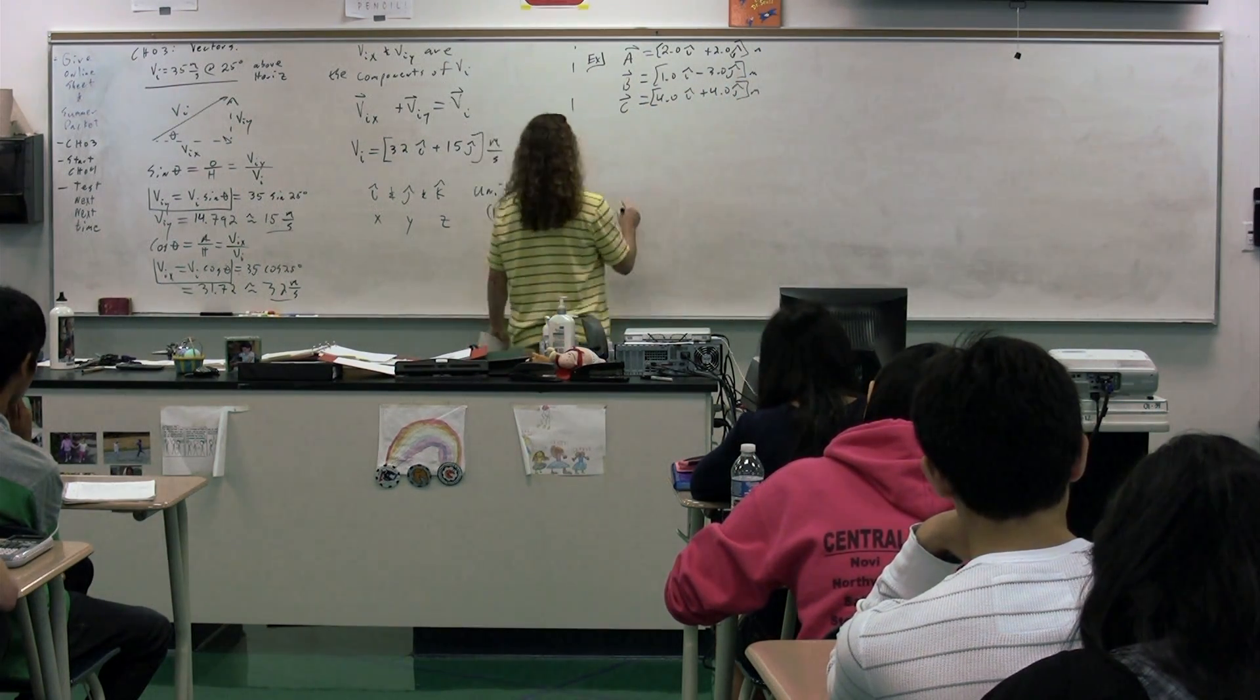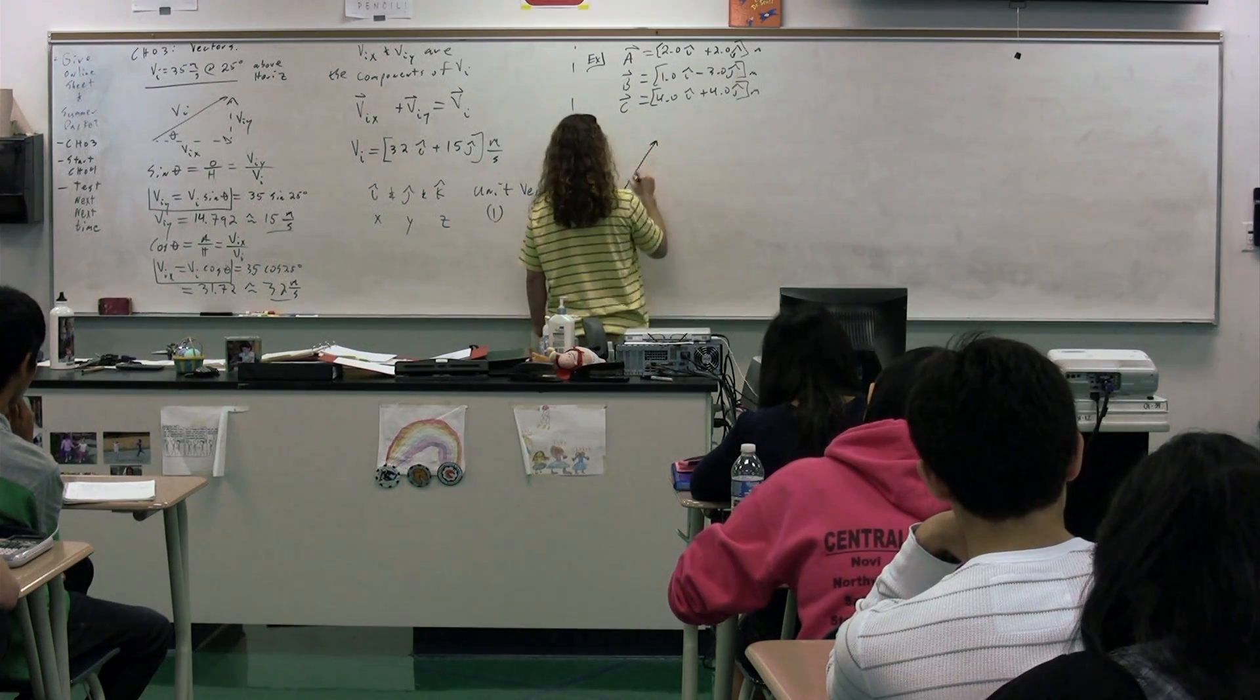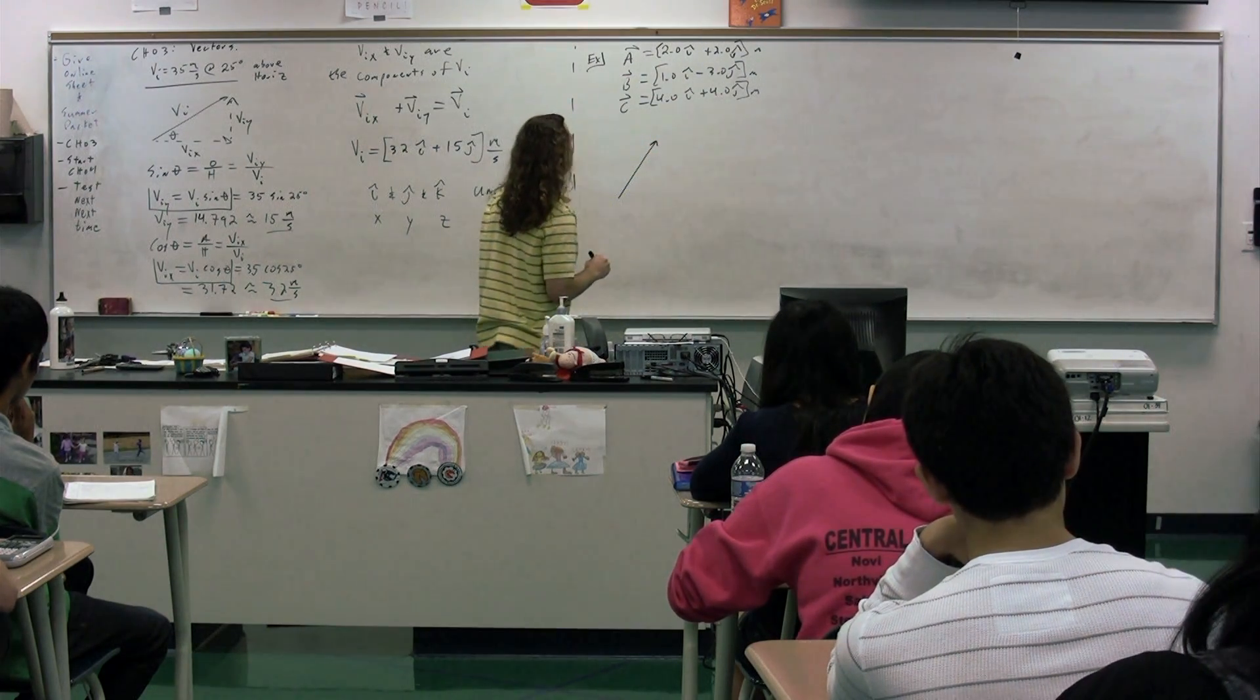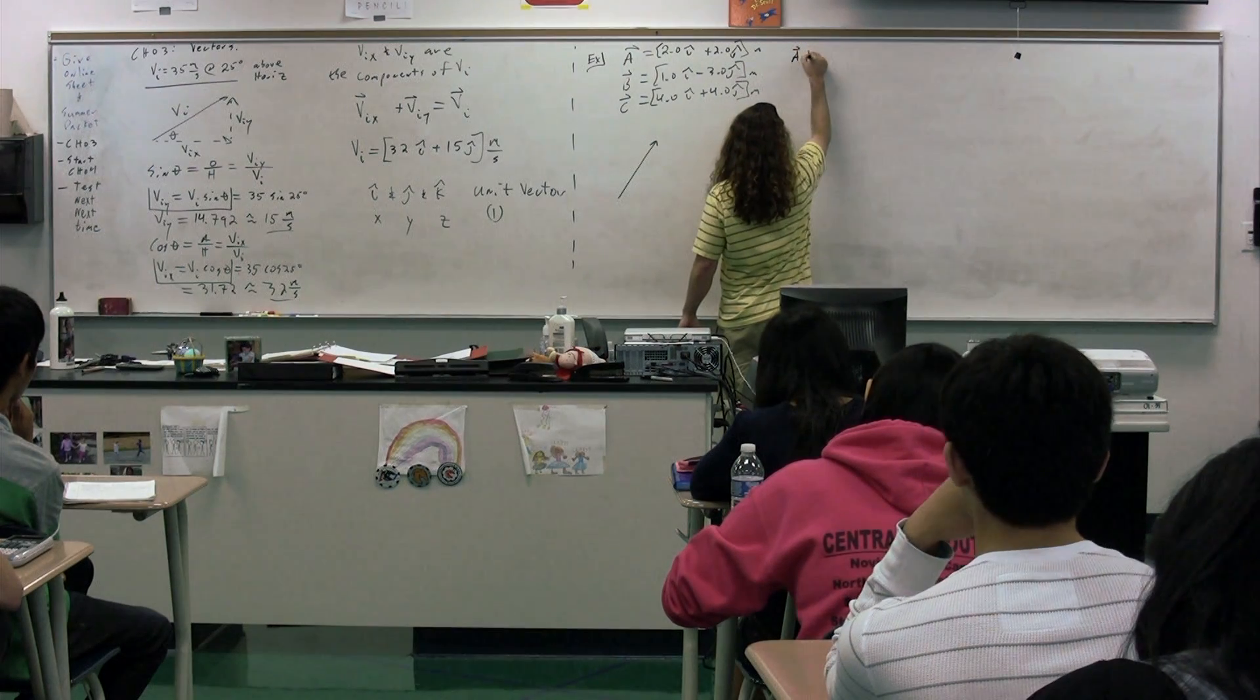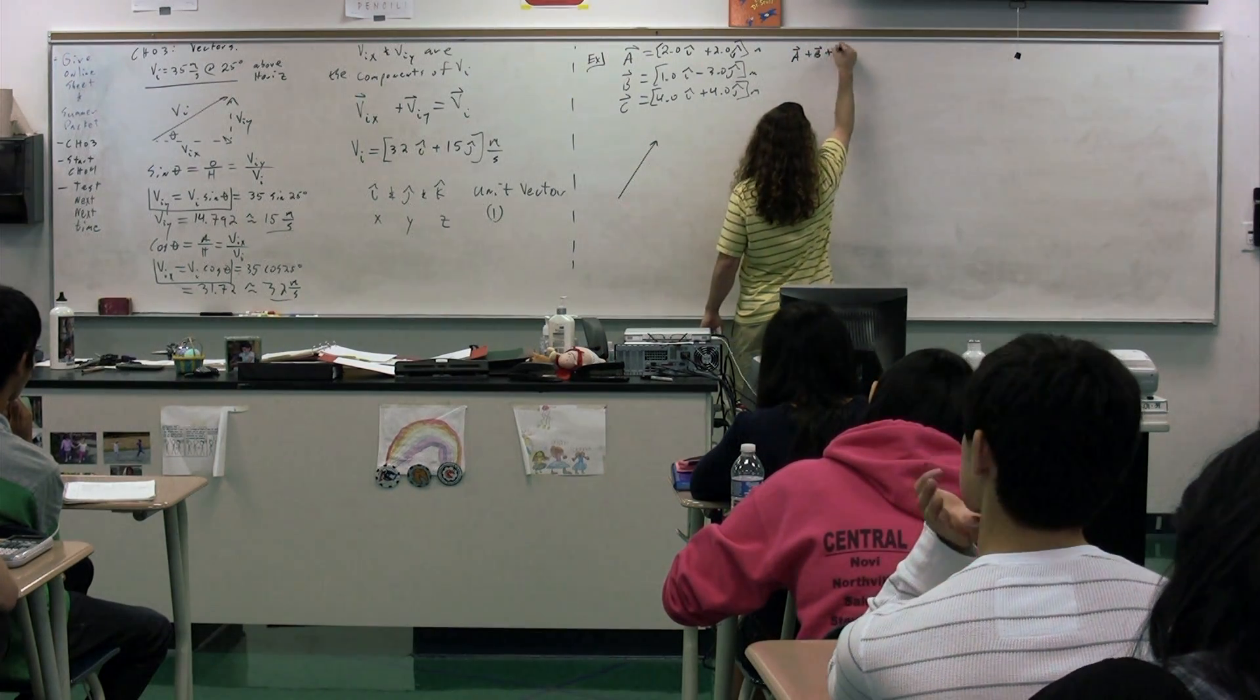You can see that we have vector A, which looks something like this. Vector B, if we were to add these together, A plus B plus C.